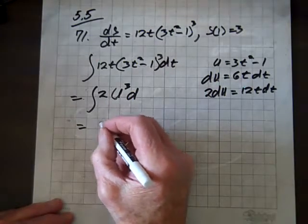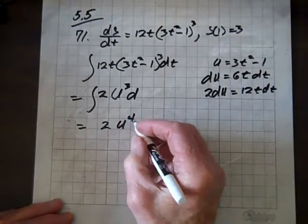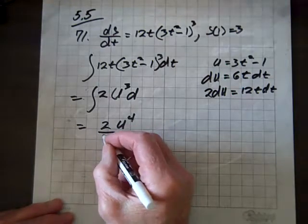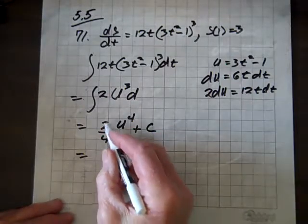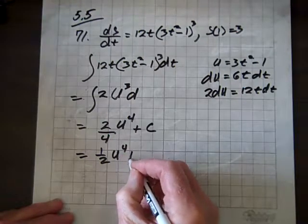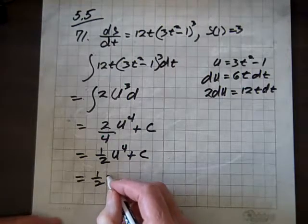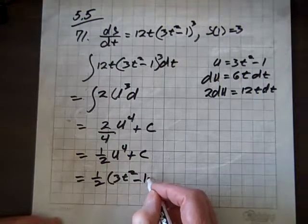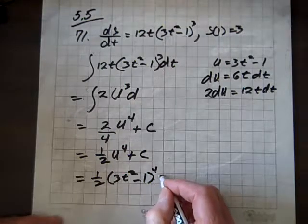So that equals, that's going to equal 2u to the fourth. And that 4 divided out, so I guess we would have had a 4 here, plus C. And now that reduces to 1 over 2u to the fourth, plus C, which equals 1 half of 3T squared minus 1, raised to the fourth power, plus C.